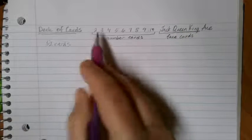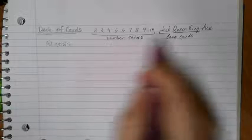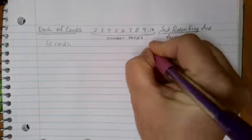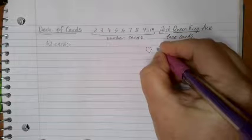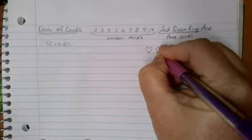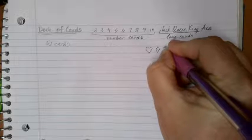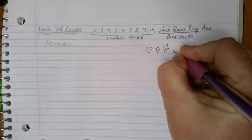Now, there's 13 different types of cards, and then these cards appear with four different suits on them. There are hearts, diamonds, clubs, and spades.